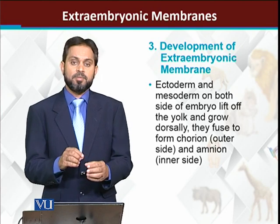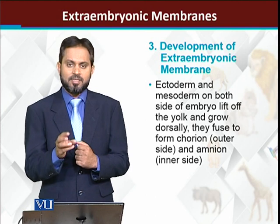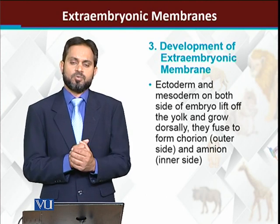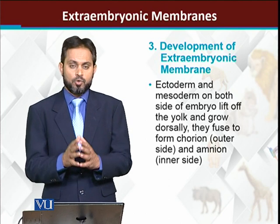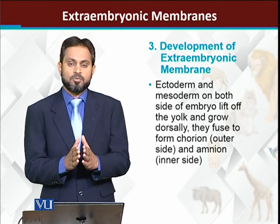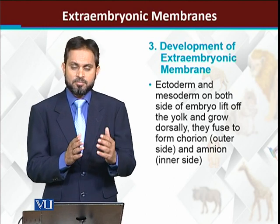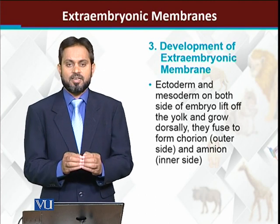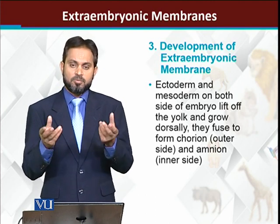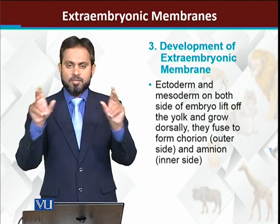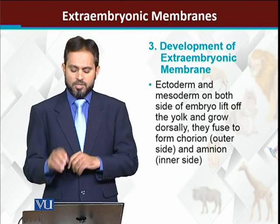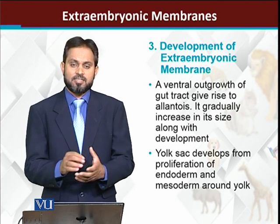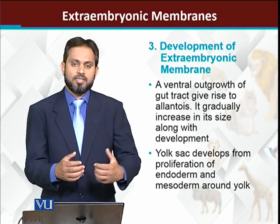How are these membranes developed? The extra embryonic membranes also develop from the embryo itself - when the embryo begins to form, it also creates these membranes. Now amnion and chorion are both formed by the ectoderm and the mesoderm merging together - the ectoderm and mesoderm merge and form two separate coverings: one is called the amnion and one is called the chorion. The allantois is generally formed from the ventral side of the gut, that is from the endoderm. So allantois is formed by the gut or the endoderm.